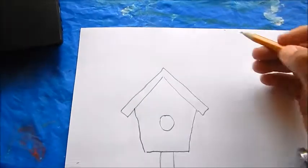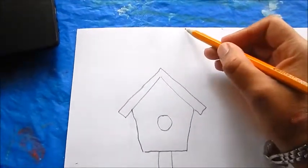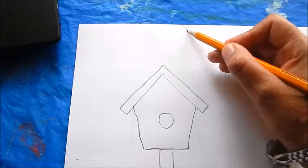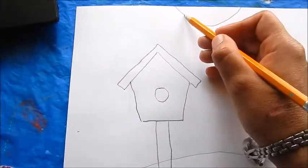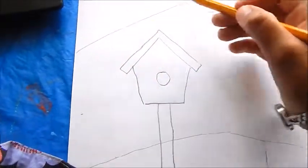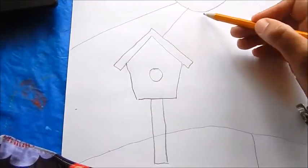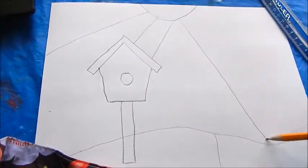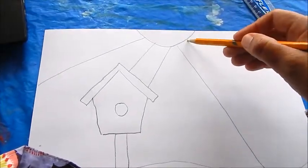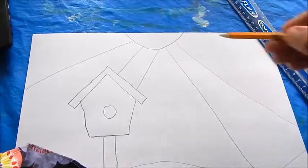Next we're going to come to the top here and make what's going to be the sun. It's going to be just a half semi-circle and then sun rays that span the whole page.